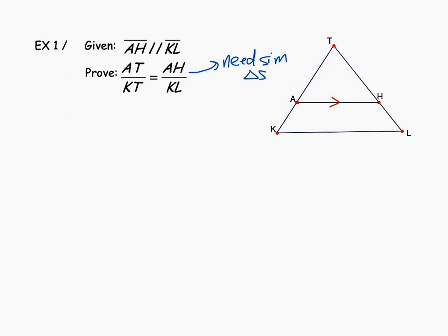We know AH is parallel to KL. If those two line segments are parallel, we could find two different pairs of congruent corresponding angles. Angle TAH is congruent to angle TKL, and angle THA is congruent to angle TLK — both pairs are corresponding angles for those parallel lines and must be congruent when lines are parallel. Using those two pairs of congruent angles, we have a pair of similar triangles: triangle ATH is similar to triangle KTL by angle-angle.